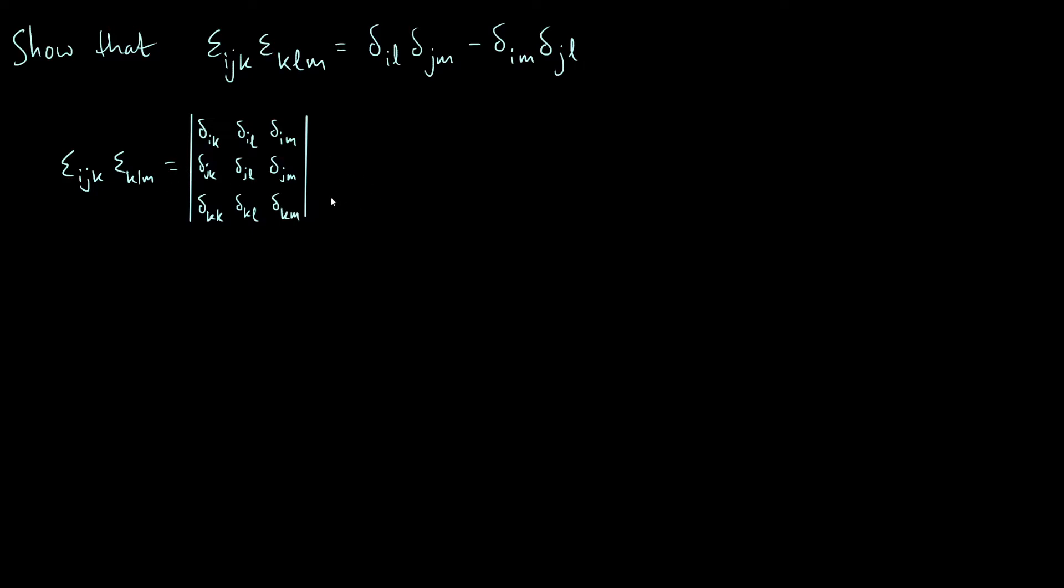So I showed this in my last video. The only difference here is that these two indices are now the same. So let's just expand this determinant so we can start to make some progress on simplifying this. So if we just write down the determinant of this matrix, the first term is going to be delta_ik, and then we're going to get delta_jl times delta_km, and then we have to subtract off delta_jm delta_kl.